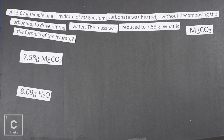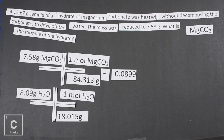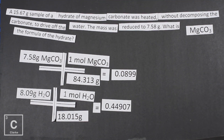Let's go back to the mass of the anhydrate and the mass of water — we're going to take mass to mole. So we do a small dimensional analysis problem. We've got 7.58 grams of magnesium carbonate, and we divide by the molar mass to cancel out those grams, and we get 0.0899 moles. And for water, 8.09 grams divided by the molar mass gives us 0.44907 moles. Don't round here — we need as many digits as possible, about four or five.